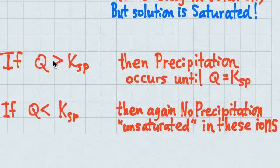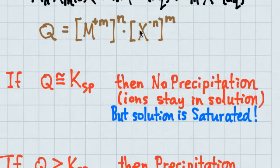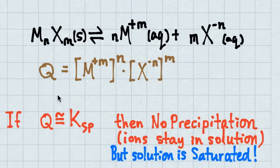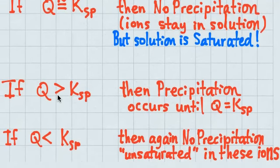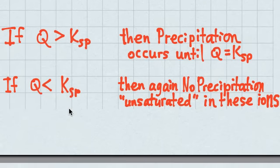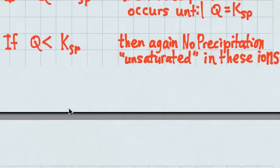Here's the deal: if Q comes out bigger than KSP, I will see precipitation, because my ions on the right-hand side are too large, so they'll reduce to make more of the solid — forcing some ions out of solution because we can't hold so much. On the other hand, if Q is small and there are relatively small amounts of ions present, that might allow no precipitation, or allow them to stay dissolved in the water.